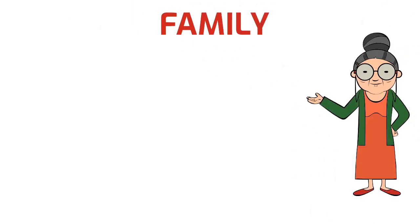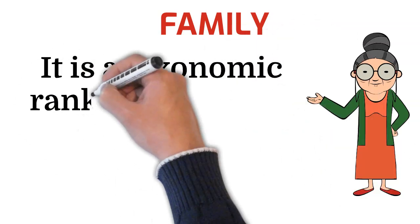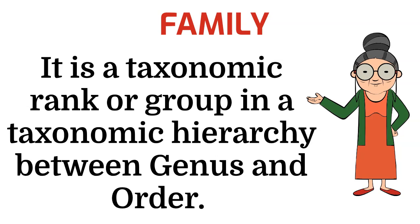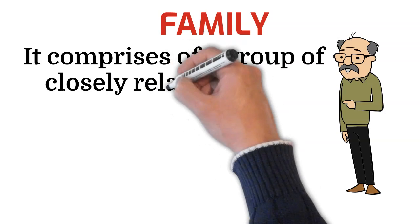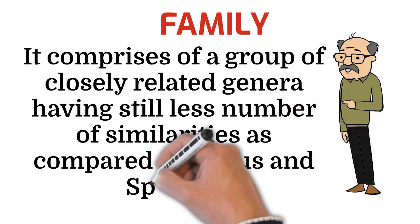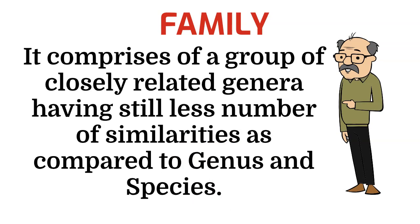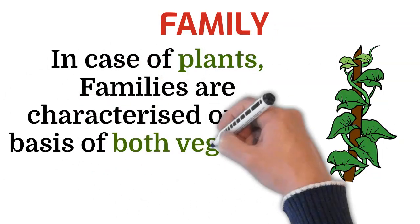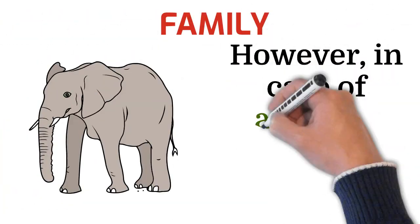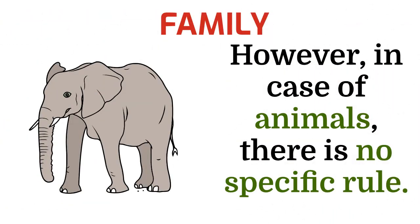Family is a taxonomic rank in a taxonomic hierarchy between genus and order. It comprises a group of closely related genera having still fewer similarities compared to genus and species. In case of plants, families are characterized on the basis of both vegetative and reproductive features. However, in case of animals there is no specific rule.